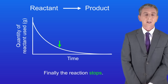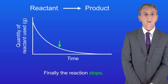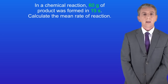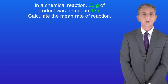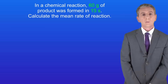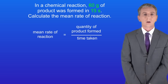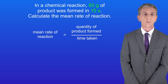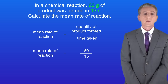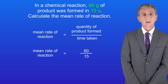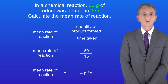In the exam you could be asked to calculate the mean rate of a reaction. Here's a sample question: in a chemical reaction 60 grams of product was formed in 15 seconds — calculate the mean rate of reaction. To do this we use this calculation: the mean rate of reaction equals the quantity of product formed divided by the time taken. The quantity of product formed is 60 grams and the time taken is 15 seconds. 60 divided by 15 gives us a mean rate of reaction of 4 grams per second.